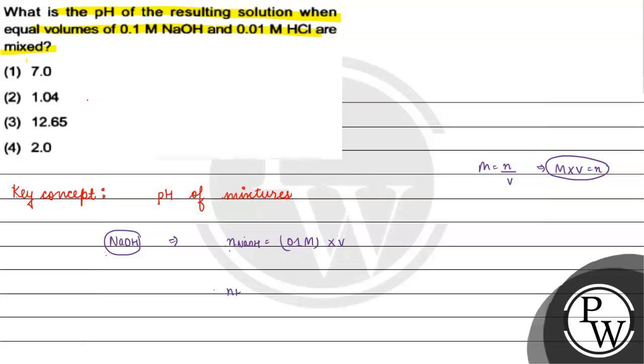And next, we have HCl. The number of moles is 0.01 molar into V.